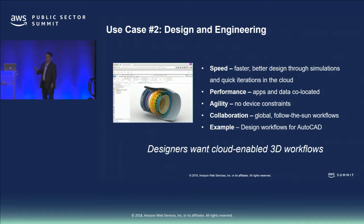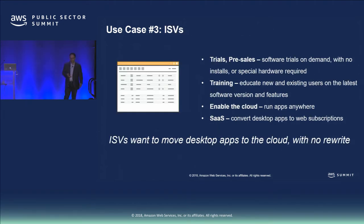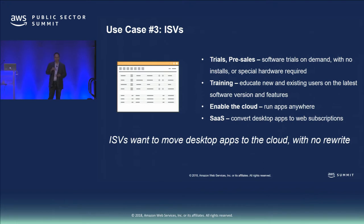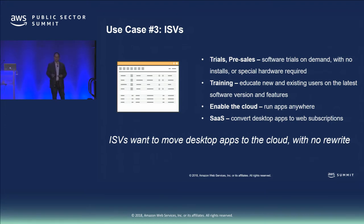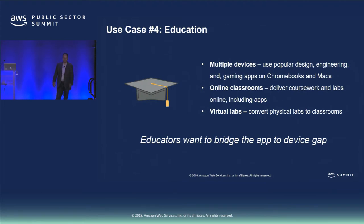Another use case is around design and engineering — we're going to focus a lot on that today. ISVs face the same idea: legacy applications they just can't SaaS-ify, and they still have a thick client they want to deliver. AppStream is a great way for them to do that.